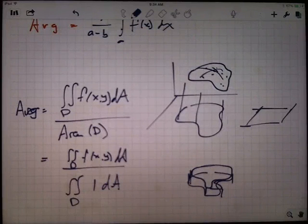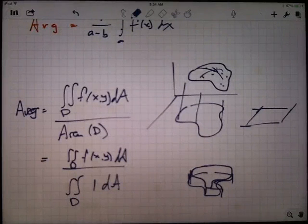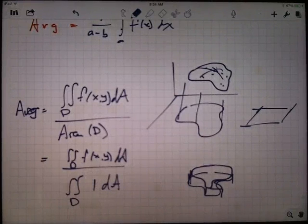So anyway, that's the notion of the average value. It shows up in 15.1, but it's a more general concept than just averaging over rectangles. You can average over the general region. Take the volume, divide by the area. That's the average height.